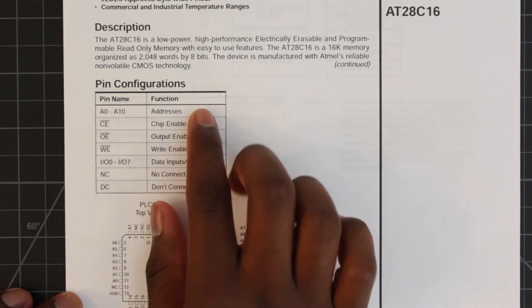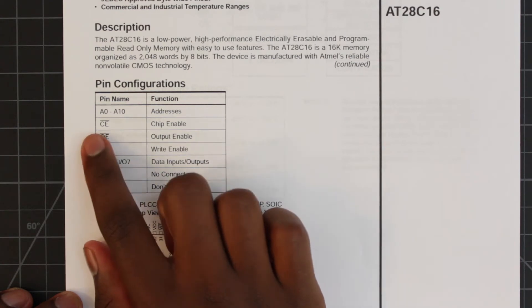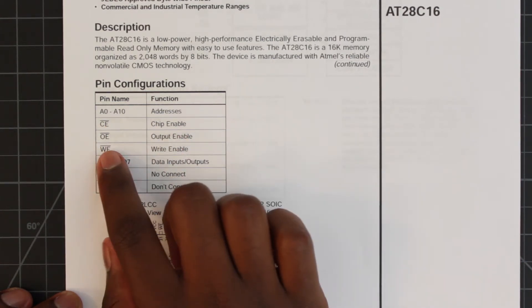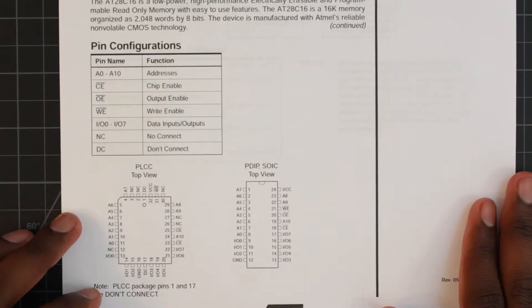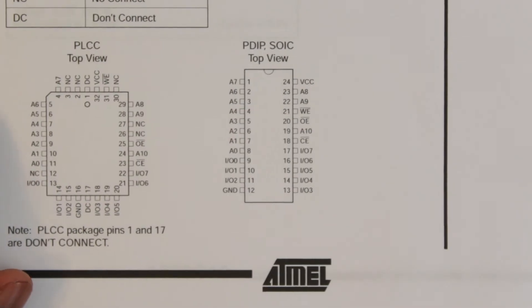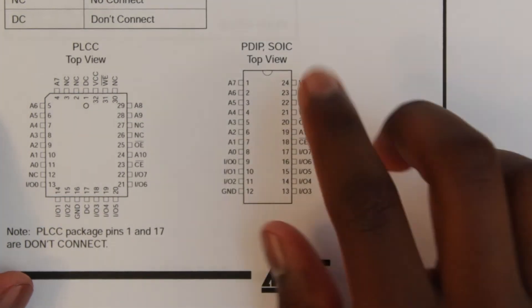We have chip enable and write enable like we are acquainted with already. However, we have this thing called output enable, and we haven't seen this before. If we take a look at the pinout, we can see that this chip doesn't actually have dedicated inputs and outputs. Rather, it has I/O pins.